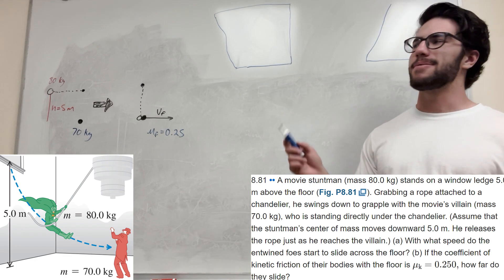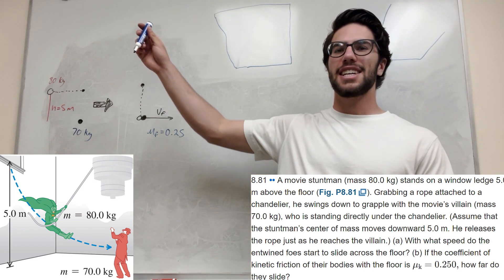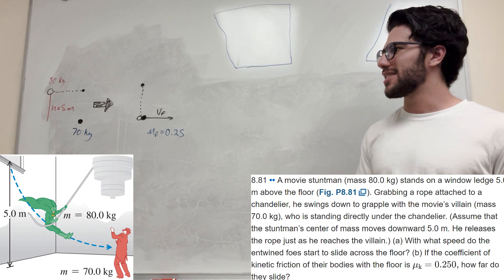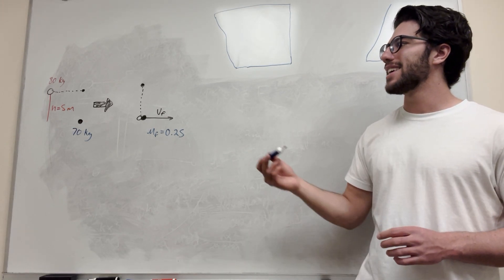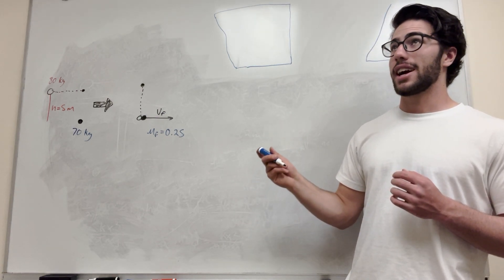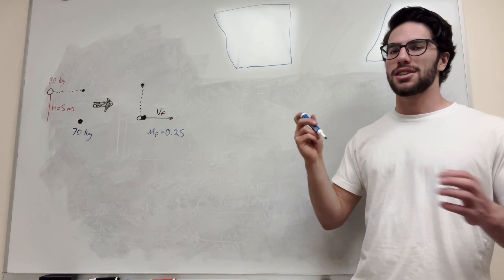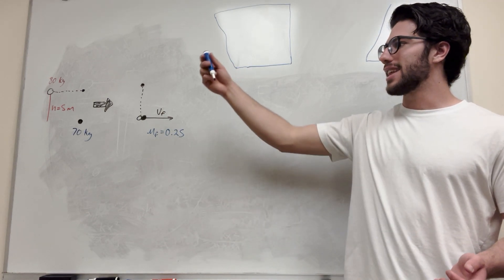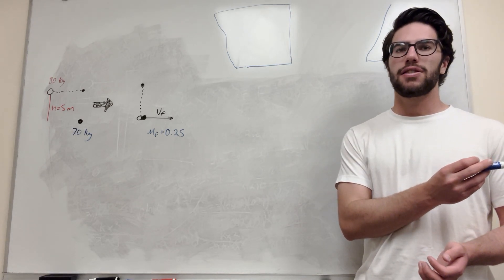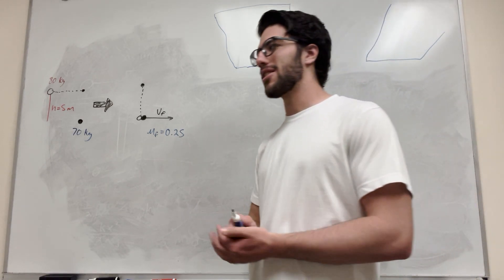So basically we got Batman and he started on a ledge and he swings down and then he hits the bad guy. I don't really watch a lot of superhero movies, but he hits the bad guy and then he lets go of the string. So of course there's going to be that change in momentum there. I guess the momentum one's going to stay the same, but you have to do the change in momentum formula and then they're going to slide across the floor and you need to know how far are they going to slide. So let's get started.